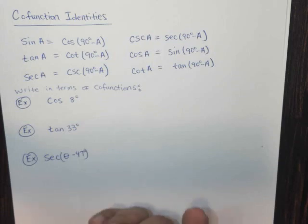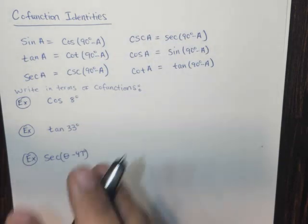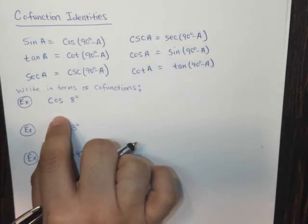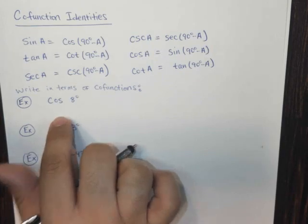So let's go ahead and work out some examples. We have cosine of 8 degrees. We're asked to write this in terms of its cofunction. What is the cofunction of cosine? It's sine.